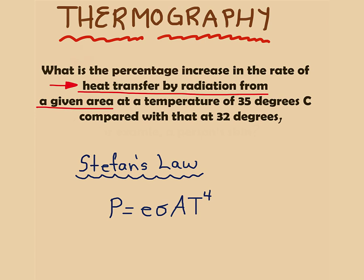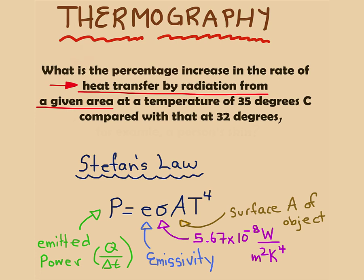To compare emitted power, we use Stefan's law. This is an equation that relates emitted power to emissivity, temperature, area, and a constant.